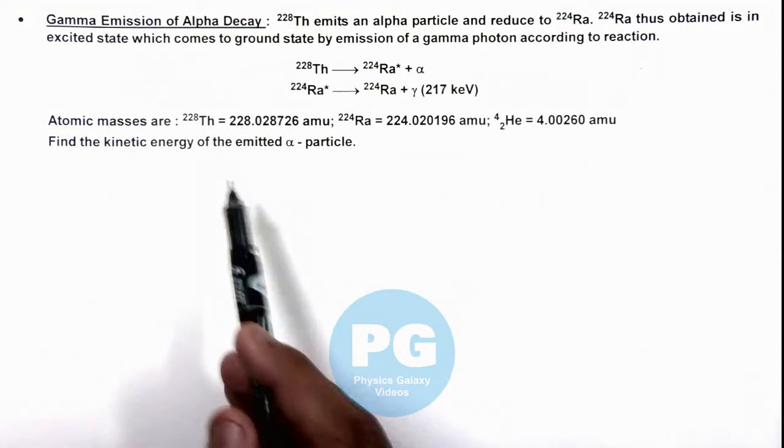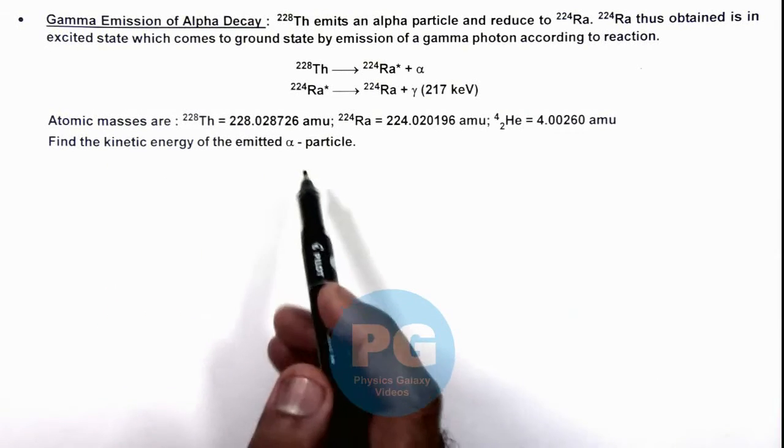Here we are given the atomic masses and we are required to find the kinetic energy of the emitted alpha particle.